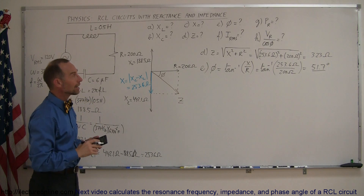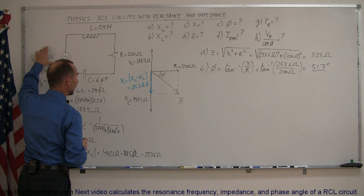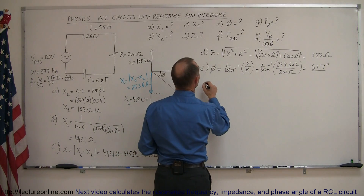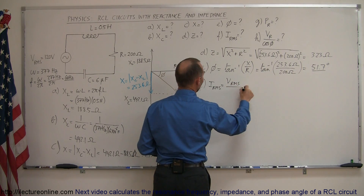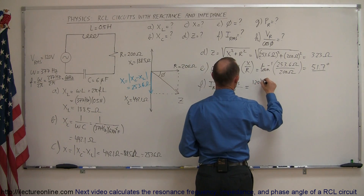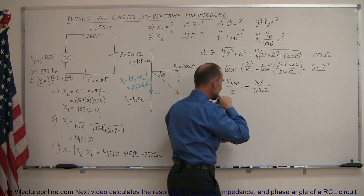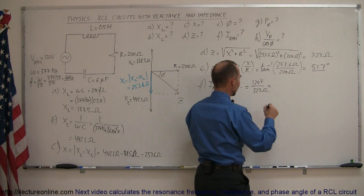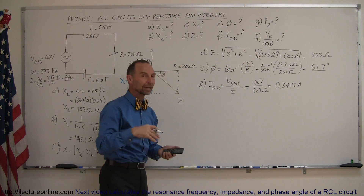Next, we're supposed to find IRMS, the root mean square current of the circuit, which is determined by the RMS voltage of the power supply and the total impedance. Using Ohm's law, IRMS equals VRMS divided by the total impedance Z. So that equals 120 volts RMS divided by the impedance of 323 ohms, giving us a current of 0.3715 amps. I keep a few extra significant figures to avoid rounding errors.